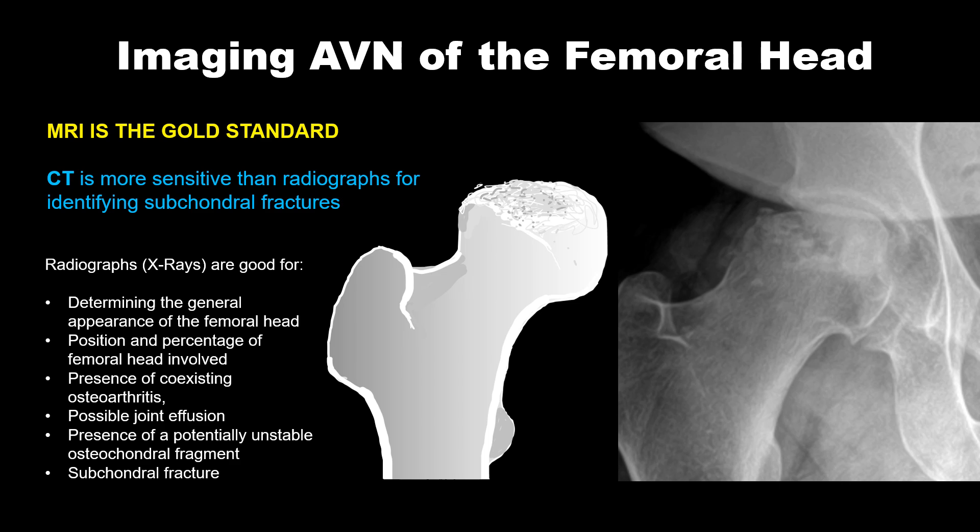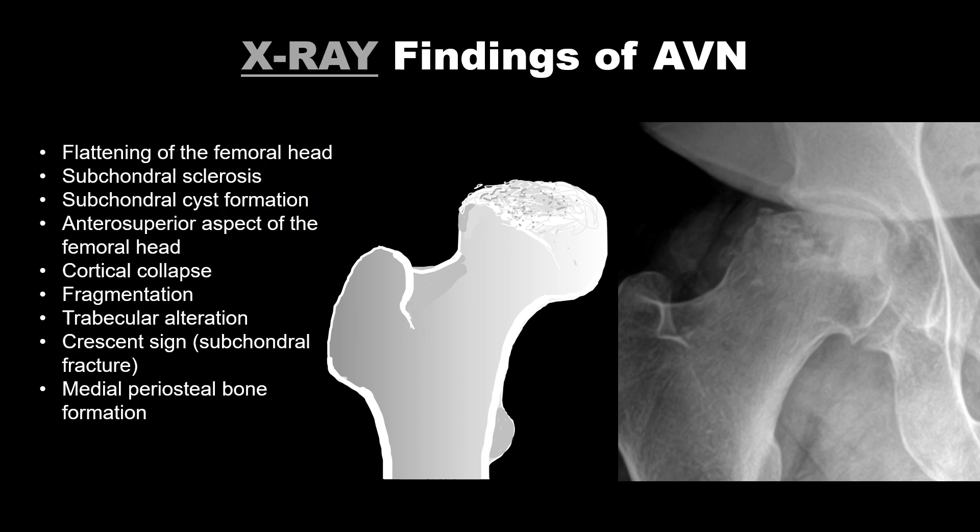CT is particularly useful for identifying subchondral fractures. X-rays still have important uses, especially for assessing the general appearance of the femoral head, the position and percentage of the femoral head involved, any coexisting osteoarthritis or joint effusion, unstable osteochondral fragments, and subtle subchondral fractures.